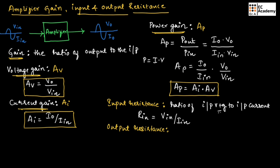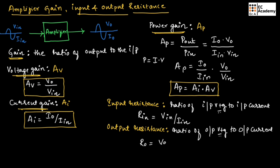Now let us understand output resistance. It is the ratio of output voltage to output current. Therefore, R_naught equals V_naught divided by I_naught.